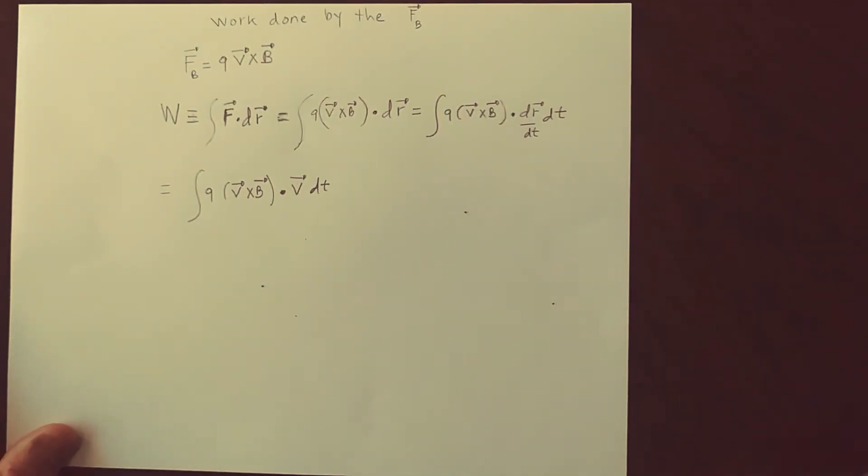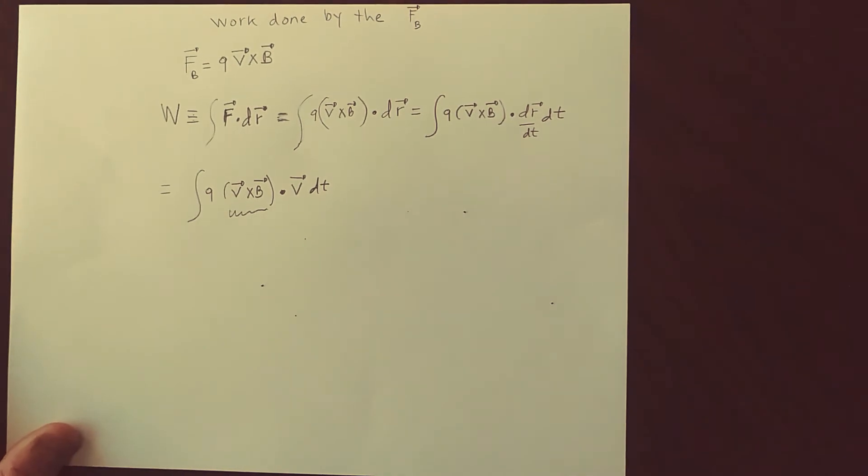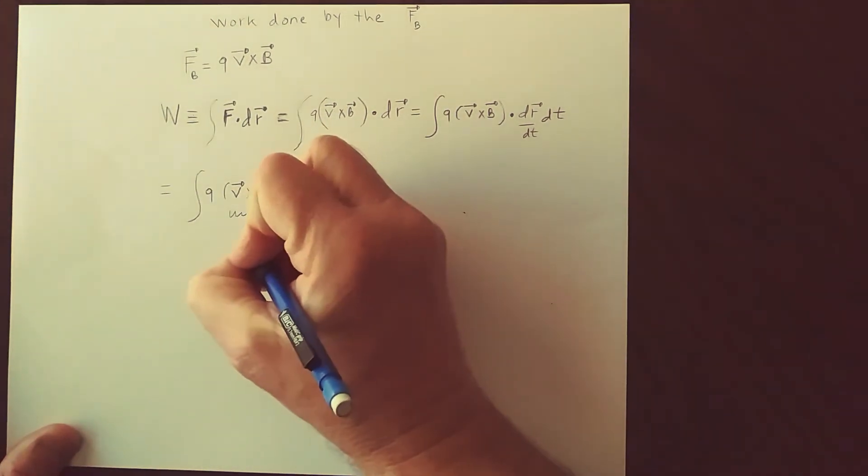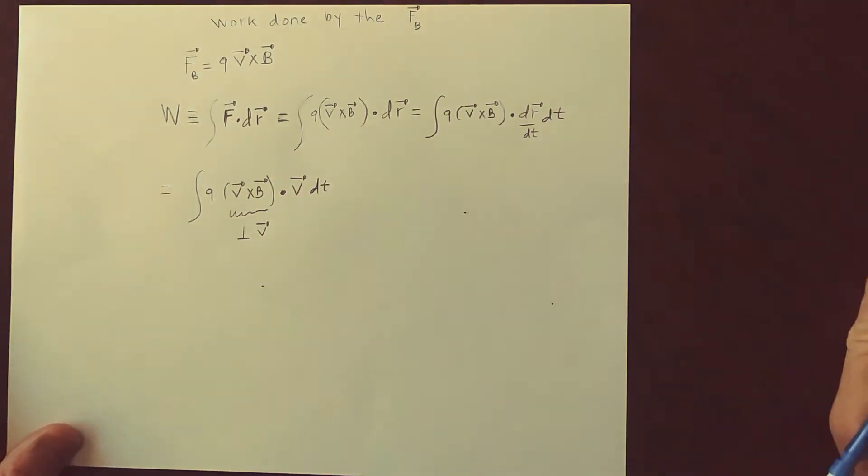But this vector, V cross B, is perpendicular to the velocity by the right-hand rule.